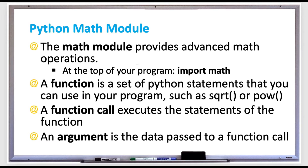The data that's passed to the function is called an argument. Some functions can have multiple arguments, such as math.pow(2, 3), which will give you 2 to the third power.